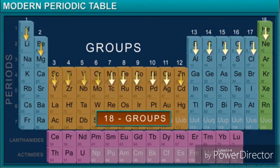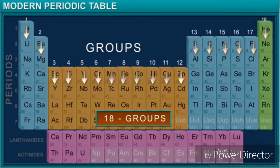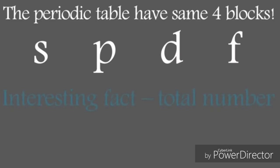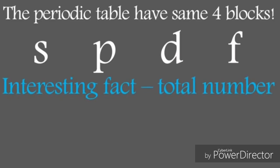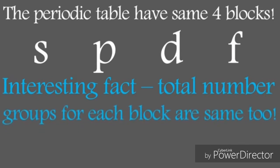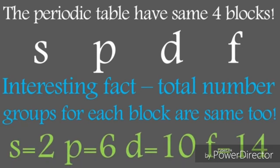We said before that the modern periodic table is classified in four blocks. Each block has a number of groups equal to the maximum number of electrons of each sublevel. The s maximum number of electrons equals 2, so it's arranged in 2 groups, and so on.